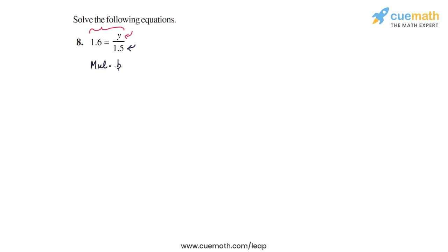So let's do that. Let's multiply both sides of this equation by 1.5. What will happen on the LHS? We will get 1.6 into 1.5, and on the RHS we will have y divided by 1.5 into 1.5.